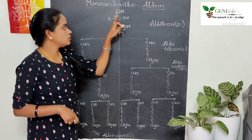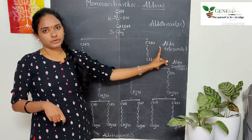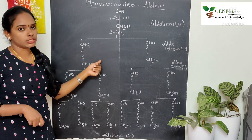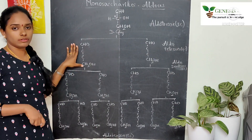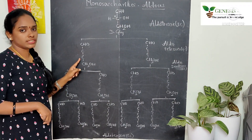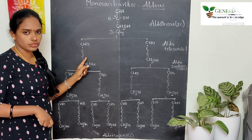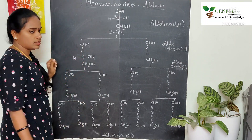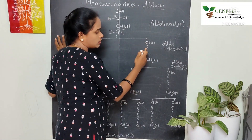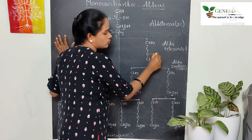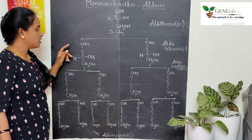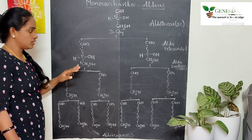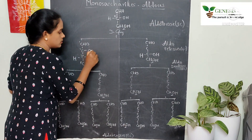Aldotriose contains an aldehyde as the functional group and three carbon atoms. Next, aldotetroses contain an aldehyde functional group and four carbon atoms. The last carbon is the primary carbon atom. The chiral carbon farthest from the functional group must contain OH on the right side — like D-glyceraldehyde — and H on the left side. So for both aldotetroses, the farthest carbon has OH on the right.